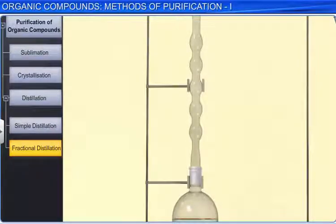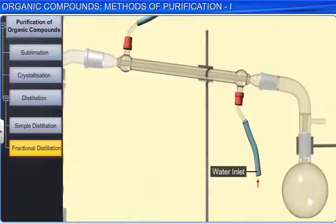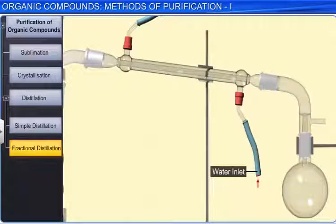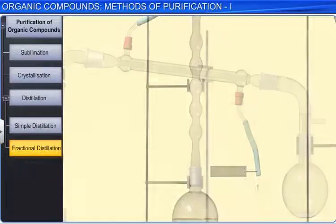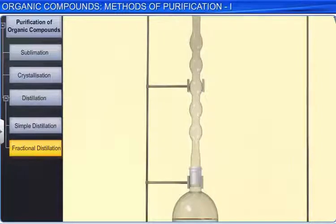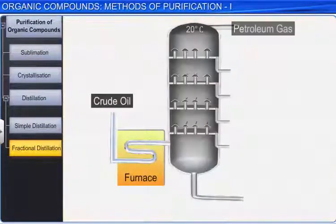The vapors of the low boiling component rise to the top of the column, becoming purer as they reach the top. The pure vapor is passed through the condenser and the liquid is collected in a receiver. The remaining liquid in the distillation flask becomes rich in the high boiling component after a series of successive distillations. Each successive condensation and vaporization unit in the fractionating column is called a theoretical plate. Fractional distillation is used in the separation of different fractions of crude oil in the petroleum industry.